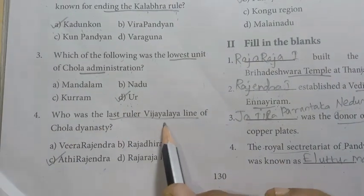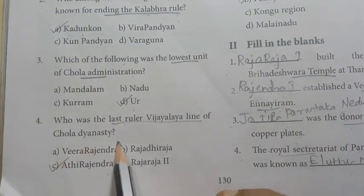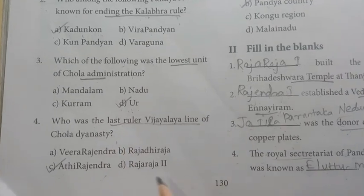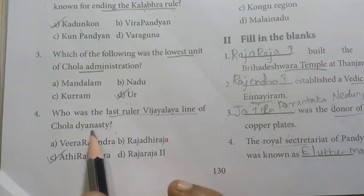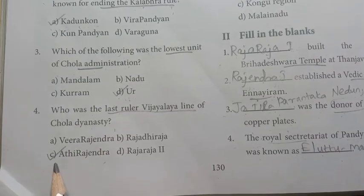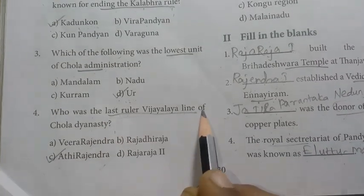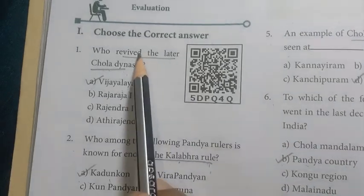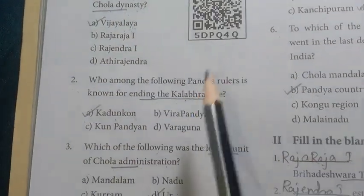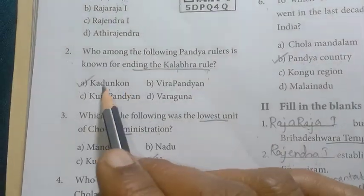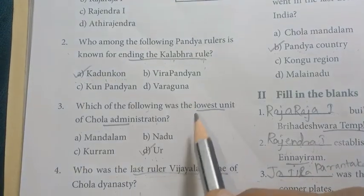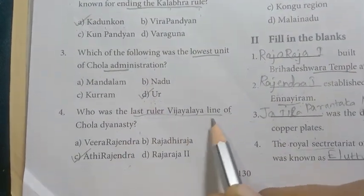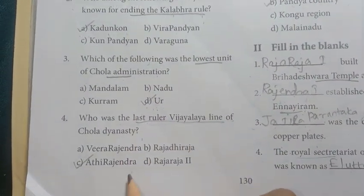Fourth question: Who was the last ruler of the Vijayalaya line of the Chola dynasty? The Cholas came from Vijayalaya's line — the last ruler was Rajendra. Fifth question: An example of Chola architecture can be seen at — D option — Thanjavur.